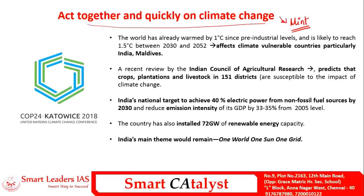The first mains article is 'Act Together and Quickly on Climate Change,' taken from Mint. The conference of parties COP24 of UNFCCC is ongoing and has propelled quick action on climate change, otherwise it will have adverse global impact. Due to anthropogenic activities, the world has warmed by 1 degree Celsius since pre-industrial levels and is likely to reach 1.5 degrees Celsius between 2030 and 2052. If this continues, it affects climate-vulnerable countries, particularly developing countries like India and Maldives, and may lead to irreversible damages.